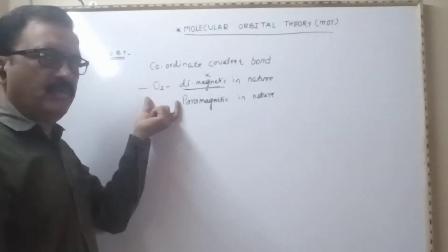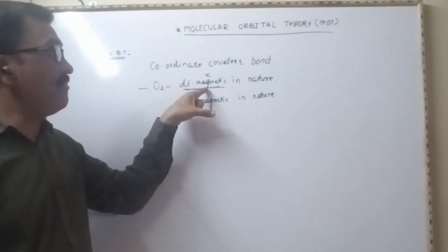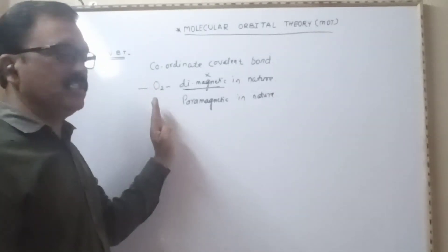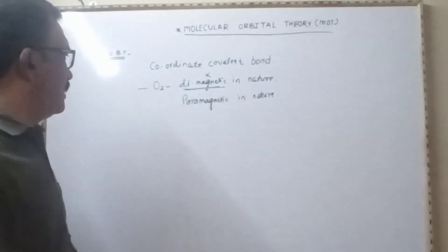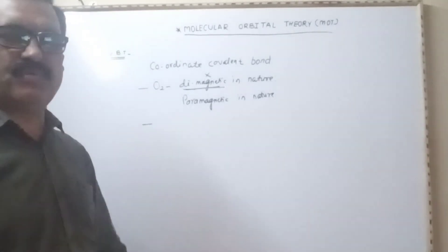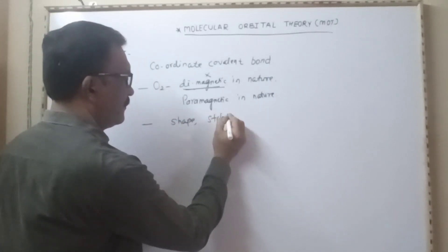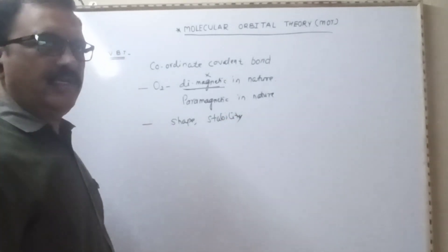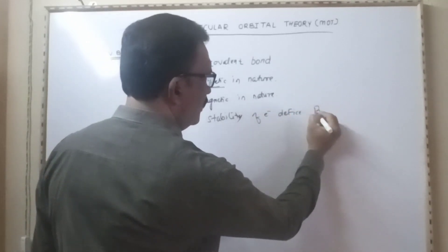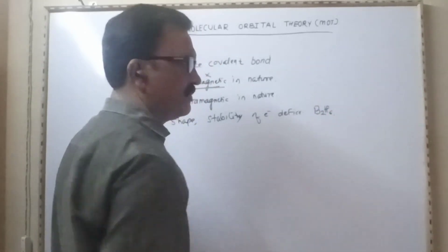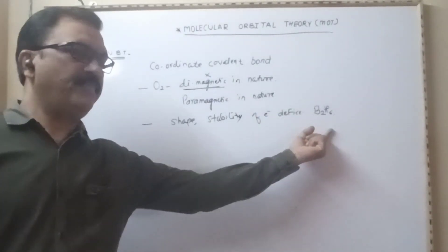During formation of O₂, two oxygen atoms share a pair of electrons forming a molecule which is diamagnetic according to Valence Bond Theory, but in several experiments it is observed that oxygen is paramagnetic. Valence Bond Theory also fails to explain the shapes and stability of electron-deficient molecules like B₂H₆ — how these molecules are formed, it fails to explain their shape as well as stability.